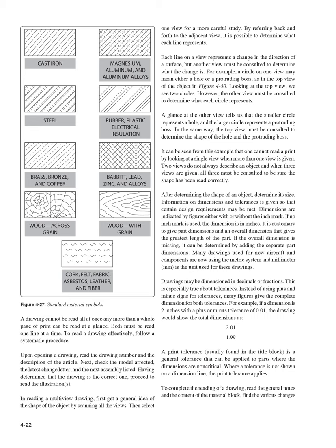Each line on a view represents a change in the direction of a surface, but another view must be consulted to determine what the change is. For example, a circle on one view may mean either a hole or a protruding boss — looking at the top view, two circles are visible, but the other view must be consulted to determine what each circle represents. A glance at the other view tells us the smaller circle represents a hole and the larger circle represents a protruding boss. One cannot read a print by looking at a single view when more than one view is given. When three views are given, all three must be consulted to be sure the shape has been read correctly.